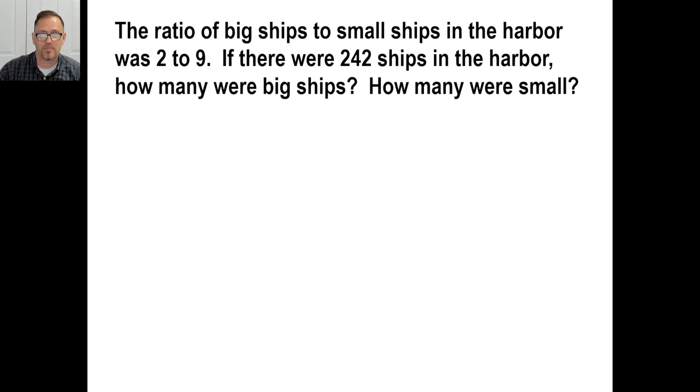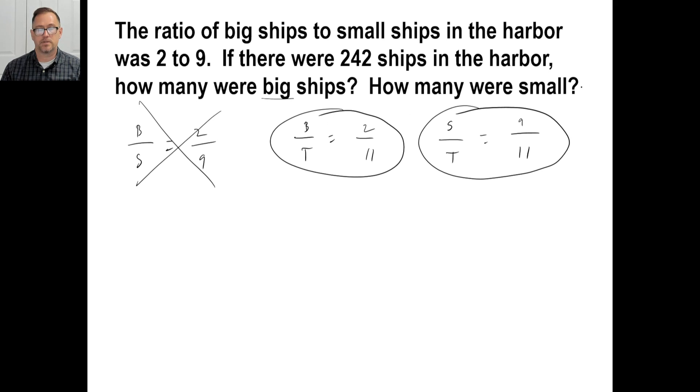Let's try the practice problem on page 312. Go ahead and write all three ratios first. Then decide. Then fill in the blanks. Then do the arithmetic. Probably take you three or four minutes. So, go ahead and take your time and do it. Big to small. Big to small is 2 to 9. Which means big to total is 2 to 11. And then small to total is 9 to 11. Right? If there were 242 ships in the harbor. So, we're going to use a total. How many were big? So, we need this one. We also need. They want small too. Those jerks.